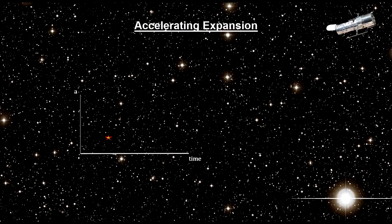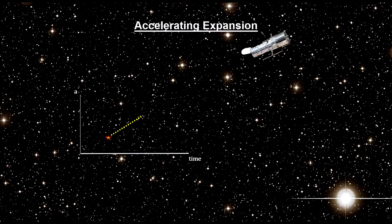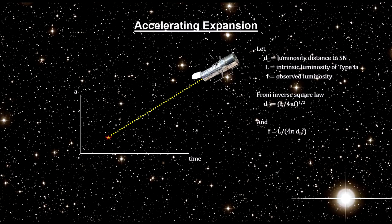Supernovae provide a luminosity reading that enables us to determine their luminosity distance via the inverse square law.